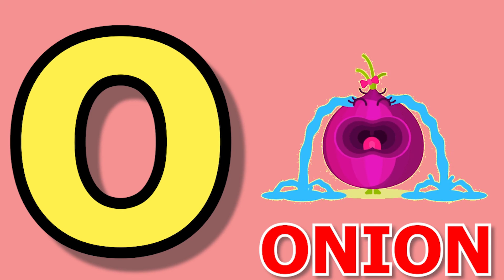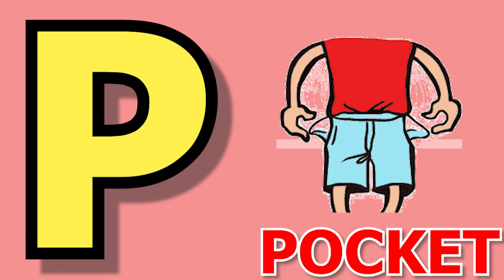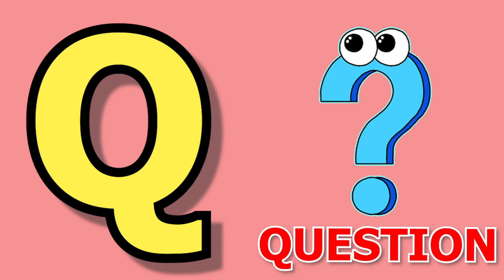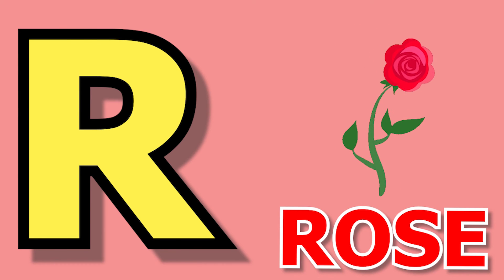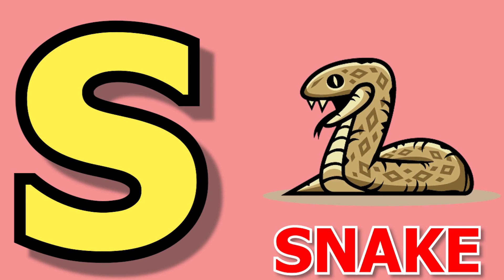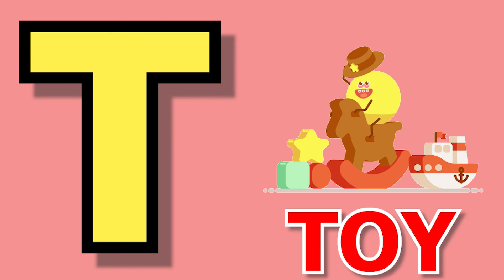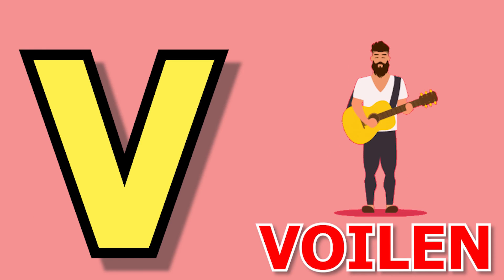O for onion, E for pocket, U for queen, R for rose, S for snake, E for toy, U for uniform, B for boy.